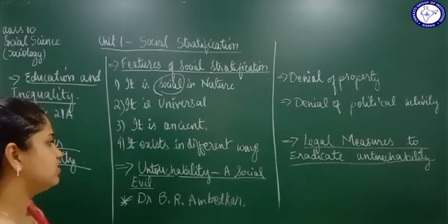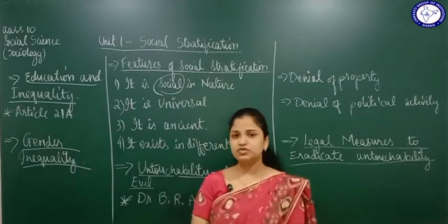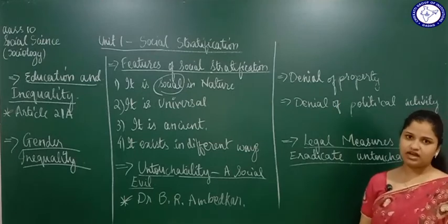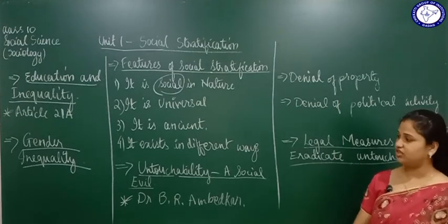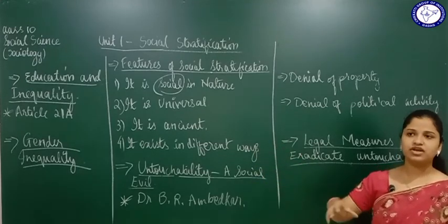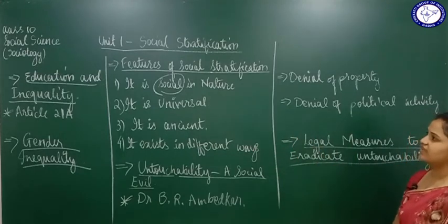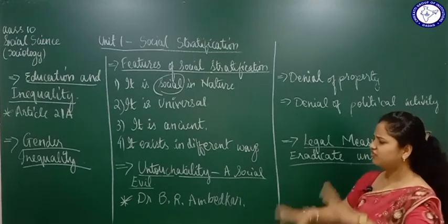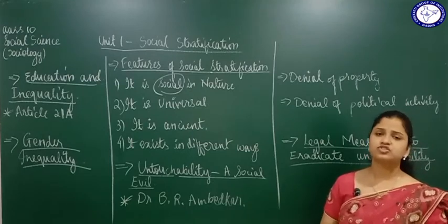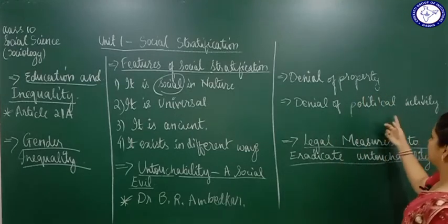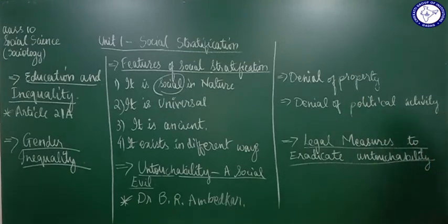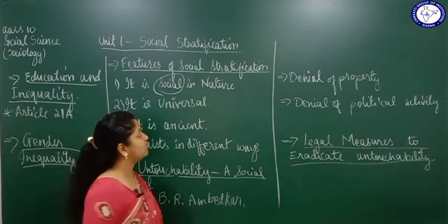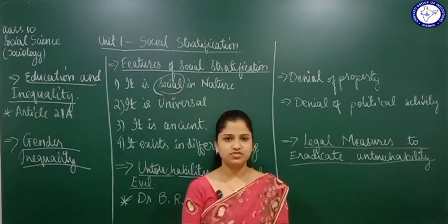To summarize what was studied in this chapter on social stratification: education and inequality, how people have unequal rights to education based on stratification; gender inequality in education and health; the four features of social stratification; untouchability as a social evil — denial of education, jobs, property, and political rights; and the legal measures like Article 17, reservation, and universal adult franchise taken by the government to eradicate untouchability from India.